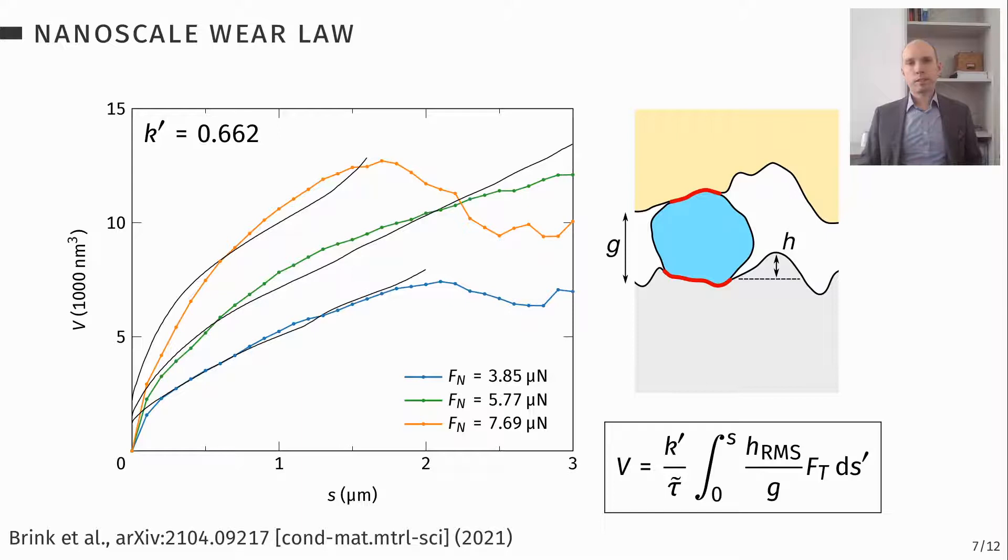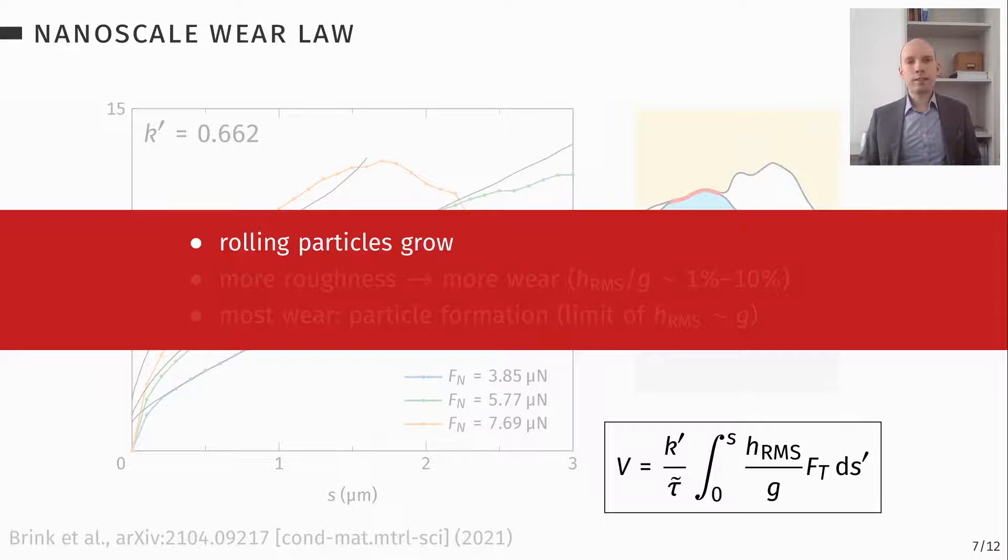And with this, I'm going to finish our excursion into the nanoscale and give you the following take home message. You have rolling particles and they always grow. This growth has a certain efficiency. More roughness means more wear. Related to this h_rms over g parameter, which we found in the steady state for our simulations to be on the order of 1 to 10%.